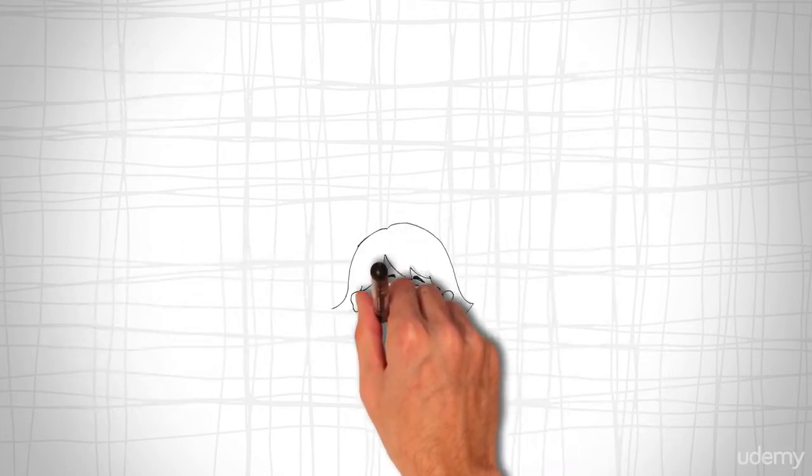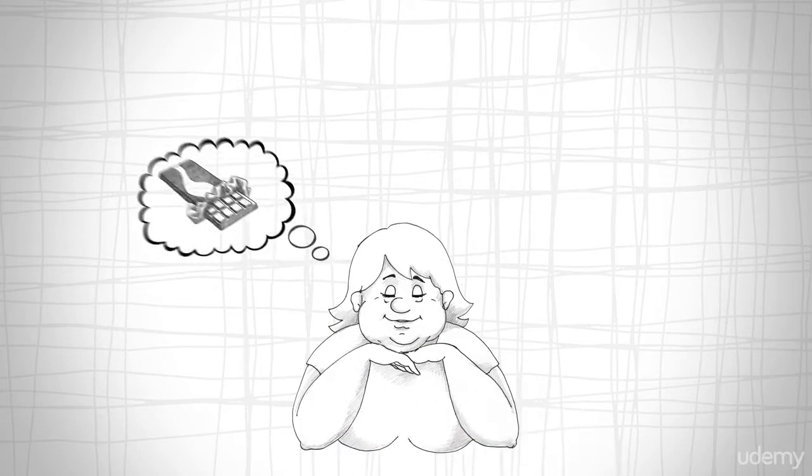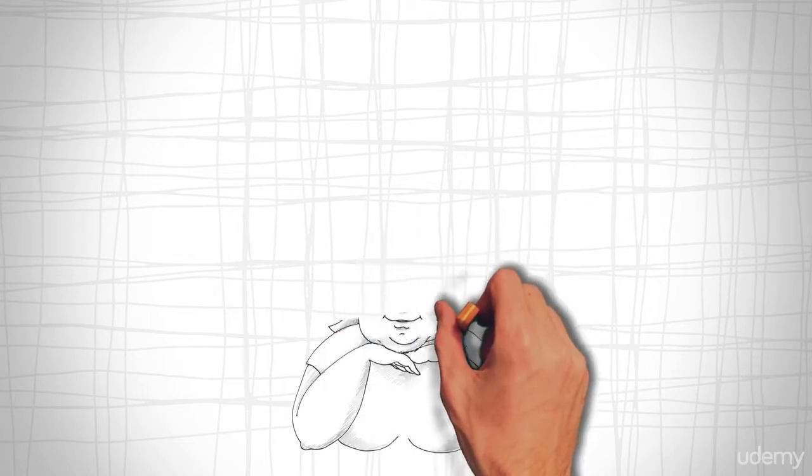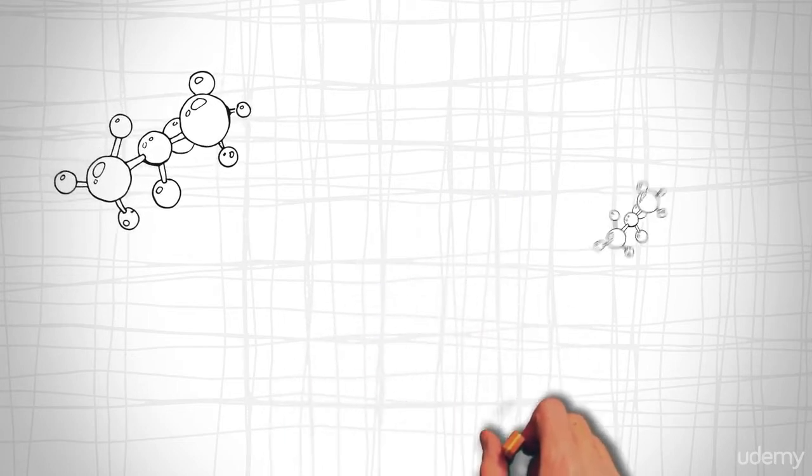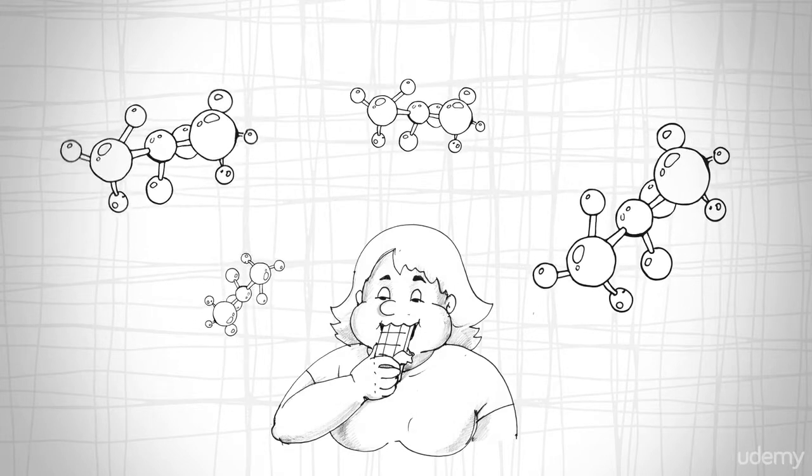Dopamine motivates you to give in to a temptation because it wants and expects a reward. It responds to a cue that your brain already associates with a specific outcome, such as the rush of sugar from a chocolate bar.